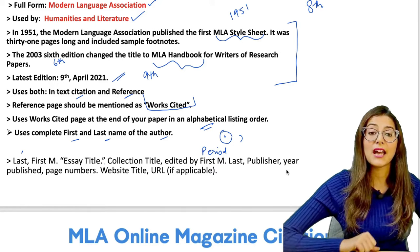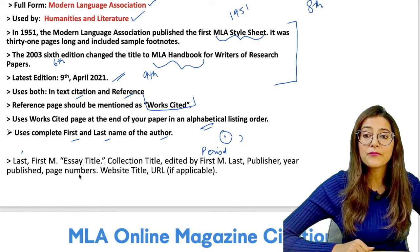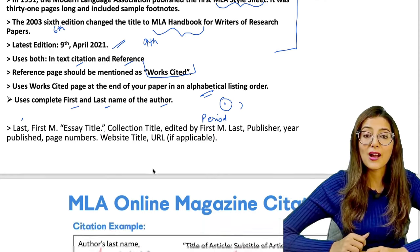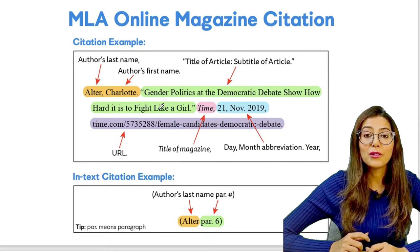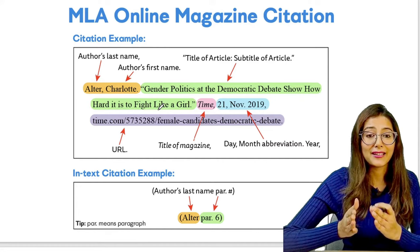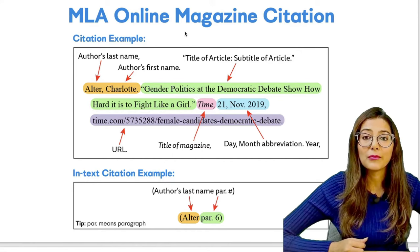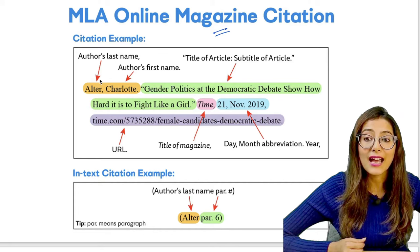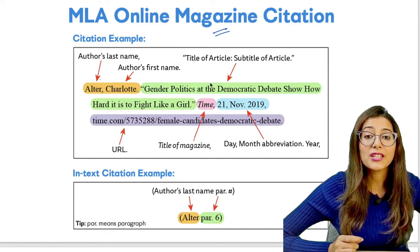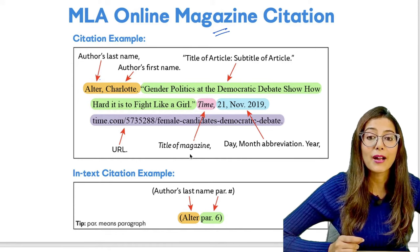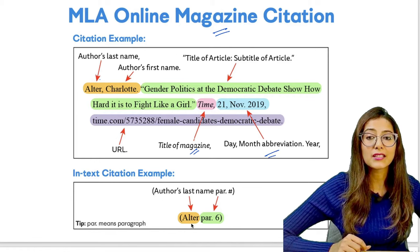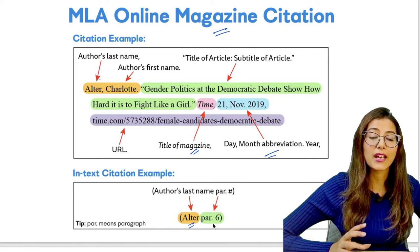In the MLA format, the publisher's name comes next, then the year. Page numbers, website title, and URL also need to be included. For the magazine citation format: author's last name, comma, first name, then a period, then the article title in quotation marks, then the magazine title, then the abbreviated date. For in-text citation: author's name, and paragraph or page number.